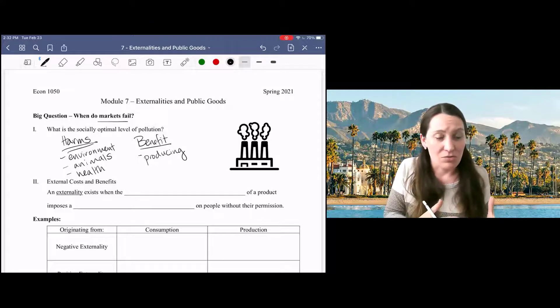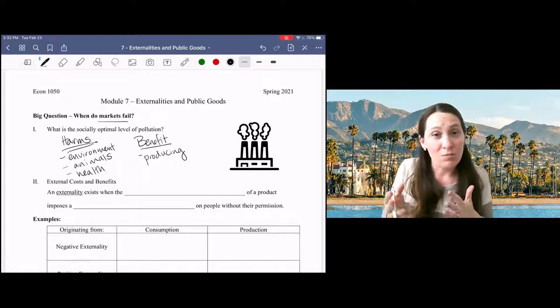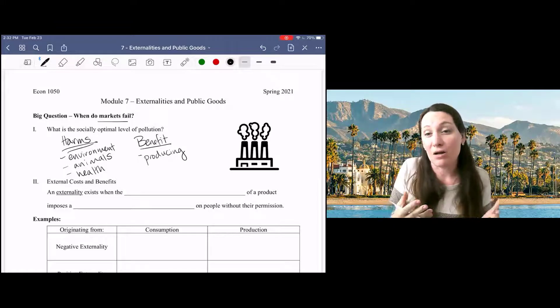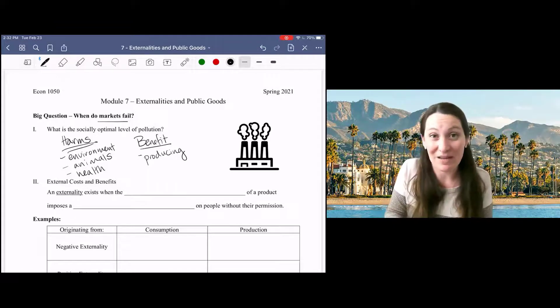We have to, though, think more critically about the socially optimal level of pollution by, of course, comparing the costs and the benefits.